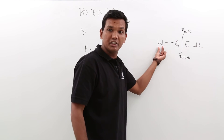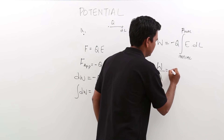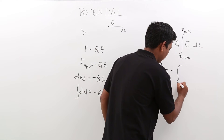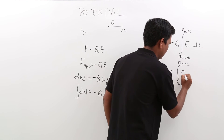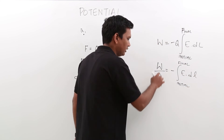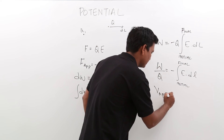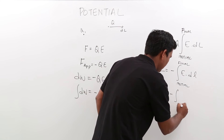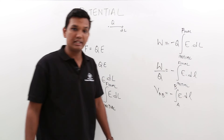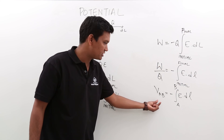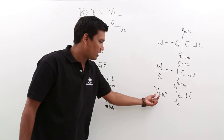The work done per unit charge is called the potential difference. So V_ab is equal to minus the integral from a to b of E dot dl. This is the potential difference between the two points when you are trying to move a charge from point a to point b.